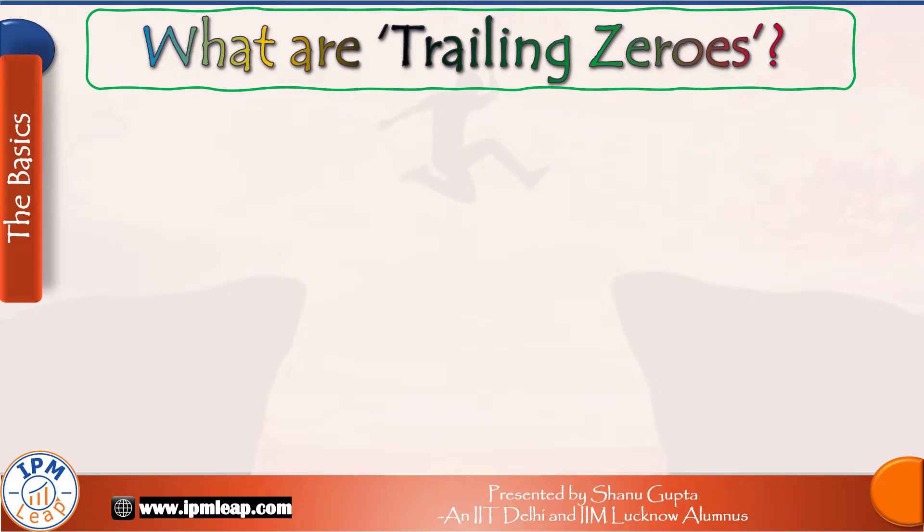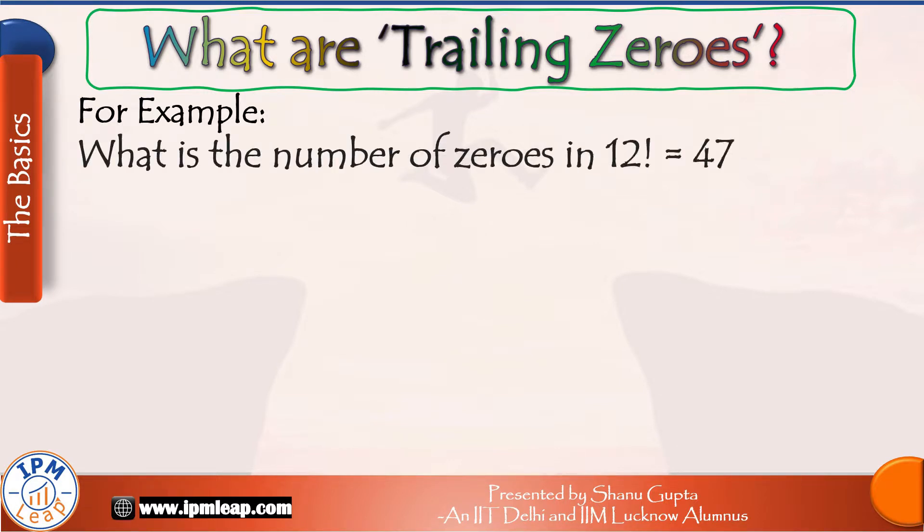First things first, what do we mean by the term trailing zeros? For example, let us suppose someone asks you, what is the number of zeros in 12 factorial? By the way, if you Google 12 factorial, it throws up a value of 479,001,600. So what's your answer? 2 or 4?